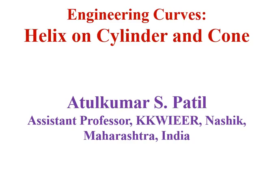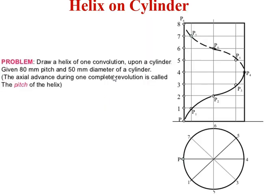Hello friends, welcome to the series of engineering curve lectures. This is the fifth lecture on helix upon a cylinder as well as helix upon a cone. A helix is a curve generated by a point moving along the surface of a right circular cylinder, advancing in the axial direction at a speed which bears a constant ratio to the speed of rotation. This curve has applications in manufacturing of helical springs and helical gears.